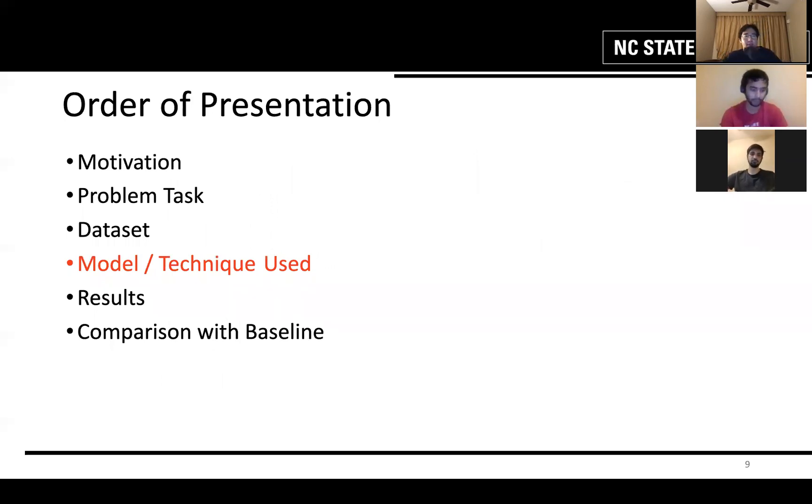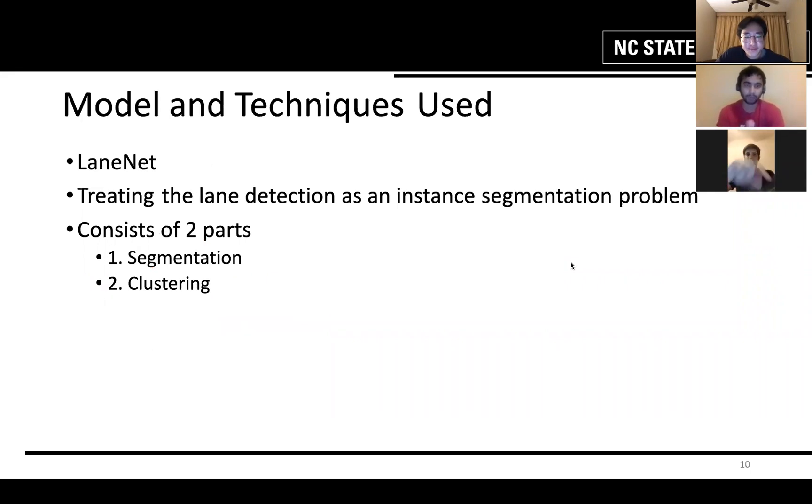Hello everyone, I'm Shushant and I'm going to discuss about the models and techniques used in the project. Our project uses a LaneNet model and we're treating the lane detection as an instance segmentation problem. Previous projects on lane detection have used binary segmentation, but binary segmentation has some issues. Like one of them is it is limited to fixed number of lanes. Another one is it is not able to cope up when the lane changes. And that's where instance segmentation comes into play.